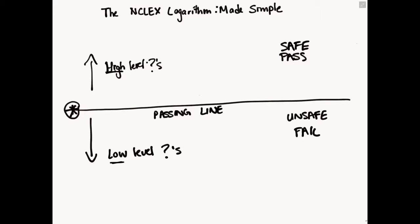You start on the passing line and get the first question. If you get it right, you go up one space above the passing line. If you get another question right, you go up two spaces, and now the questions start to get harder. If you get the next question wrong, you go back down to one space above the passing line — which is okay, because you're still above it.